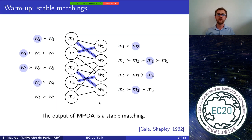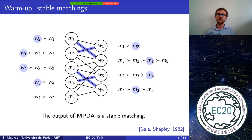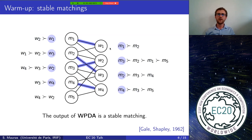Deferred acceptance comes in two variants: men-proposing and women-proposing. In men-proposing DA, men propose to their first choice, second choice, etc., and women accept or reject proposals — when a woman receives two proposals she rejects one. For example, m3 and m5 both propose to w4 initially, and w4 picks m3 and rejects m5. Running the procedure yields one stable matching. Women-proposing DA yields a potentially different stable matching.